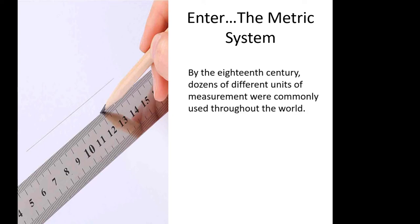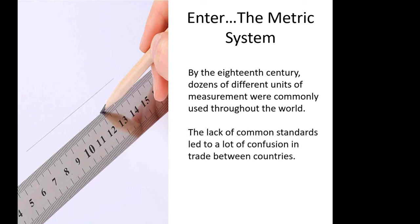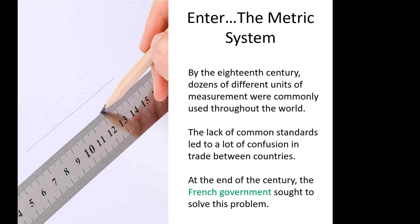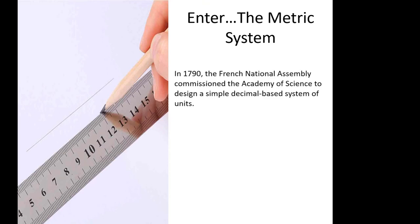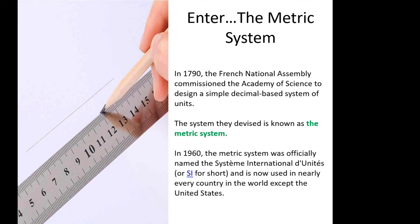To resolve this issue, the metric system of measurement was developed. By the 18th century, dozens of different units of measurement were common throughout the world, leading to confusion in trade between countries. The French government stepped in, and through their National Assembly, they commissioned the Academy of Science to design a simple decimal-based system of units. This became known as the metric system, which we use today. In 1960, the metric system was officially called the International System of Units, and it is now used in nearly every country.